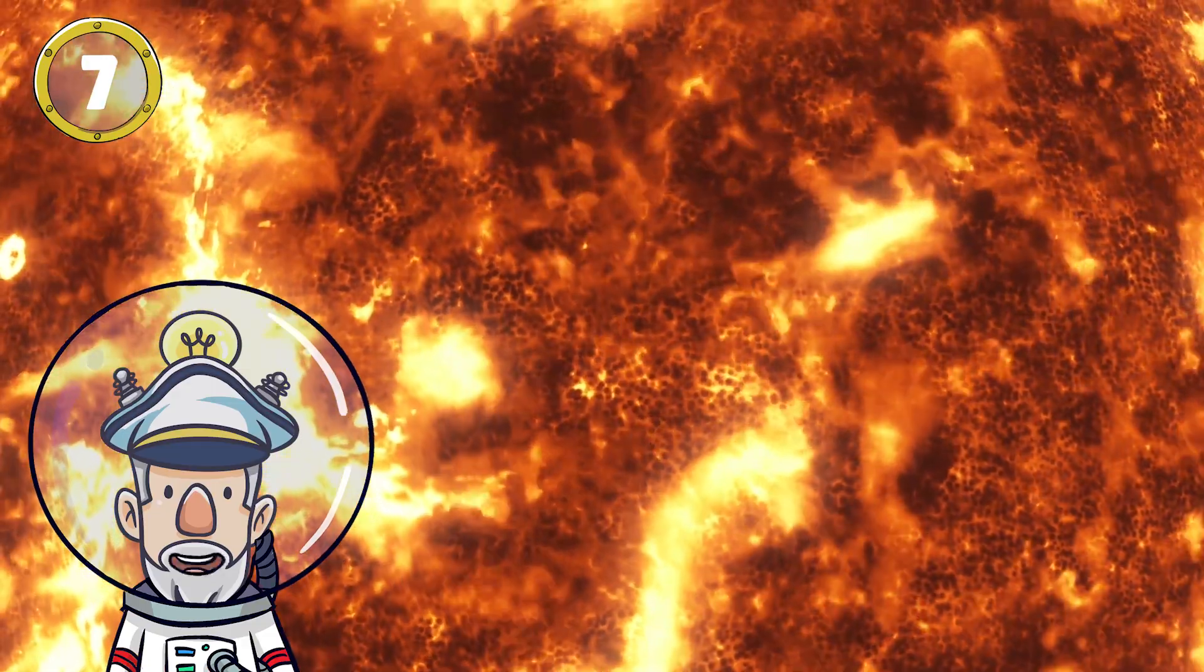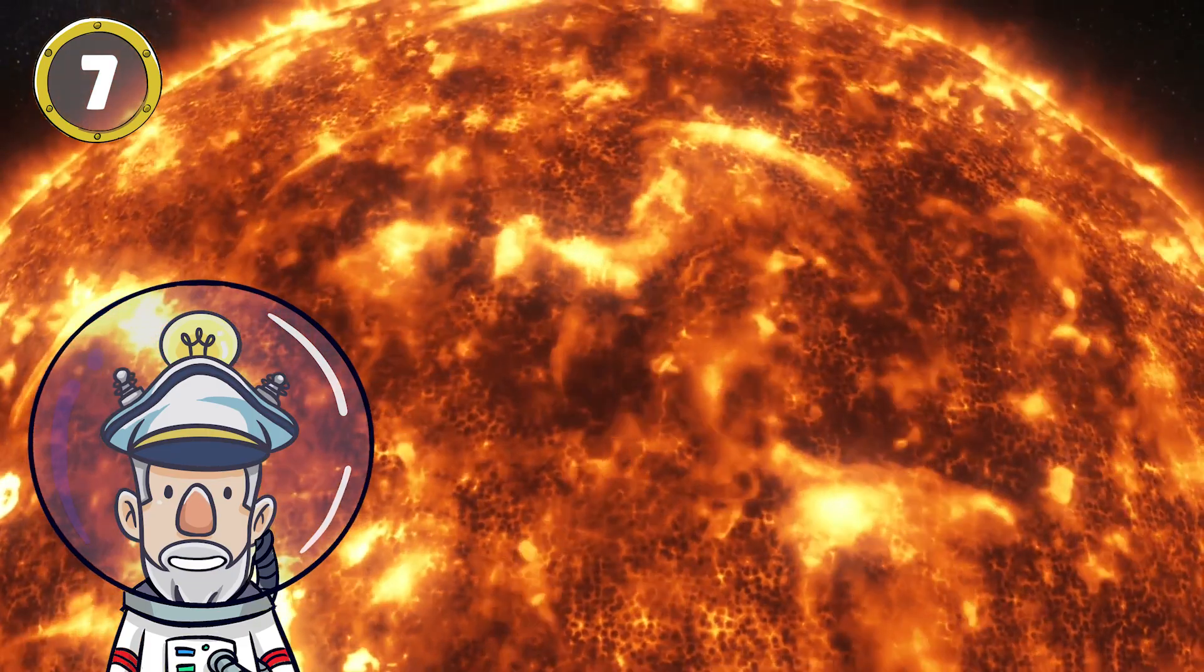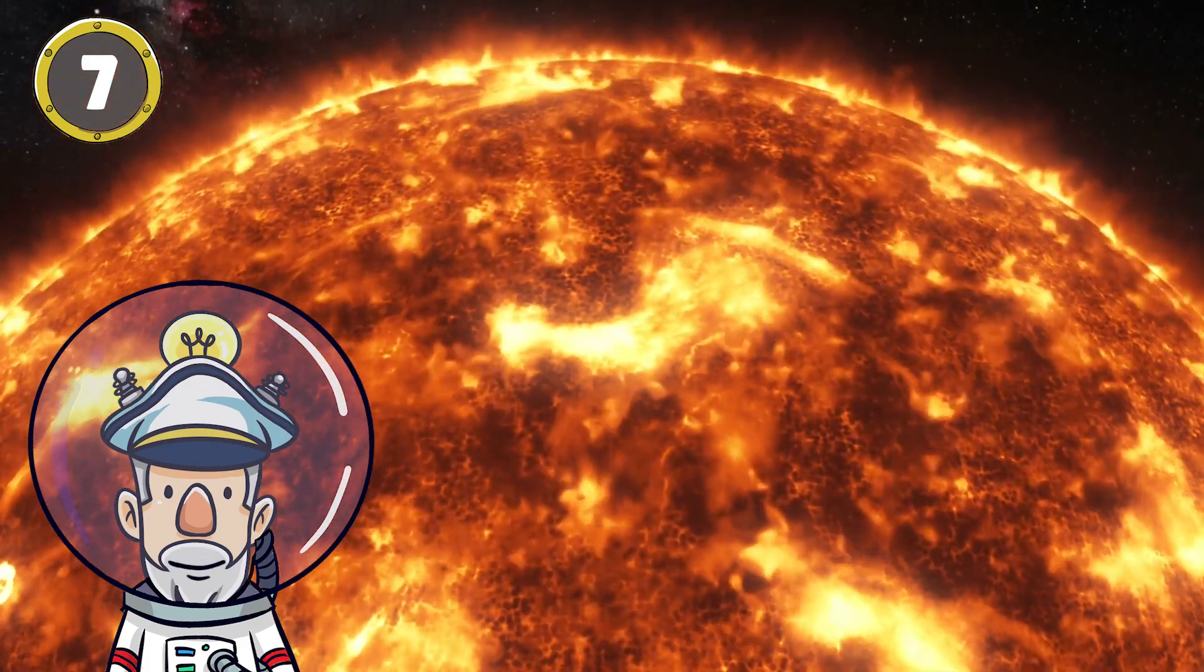Number 7: The Sun's mass consists of 73% hydrogen, 25% helium and smaller amounts of other elements.